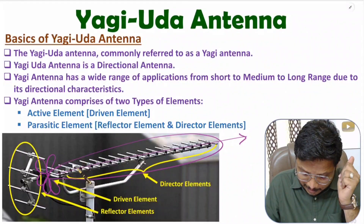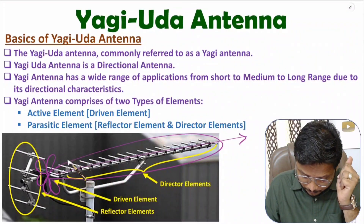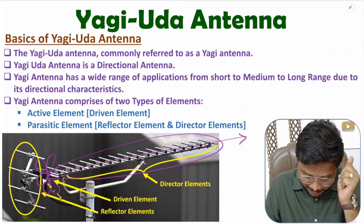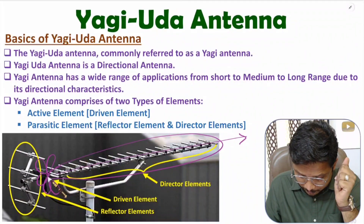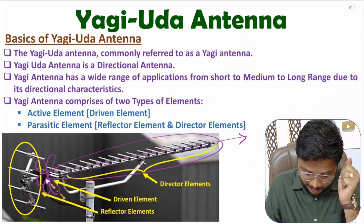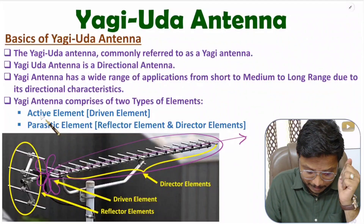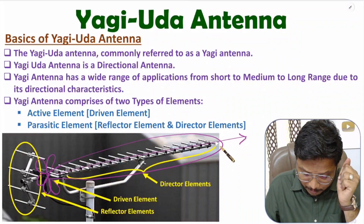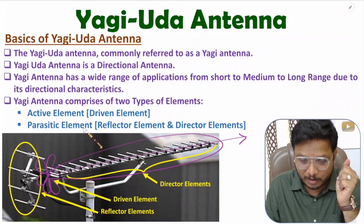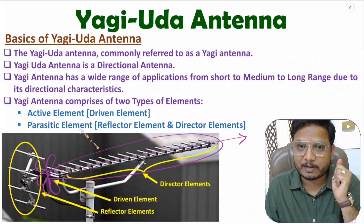The director elements and reflector elements are parasitic elements — we can observe them here. The driven element is the active element because we apply power supply to it. With the reflector element and director element, we don't apply power supply, so those are passive or parasitic elements.